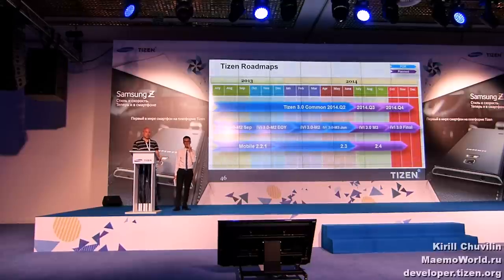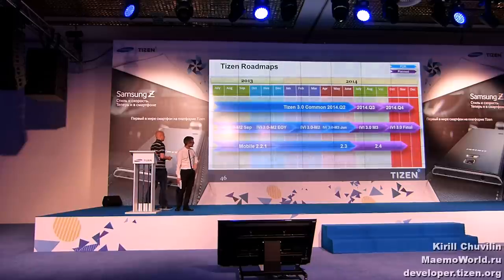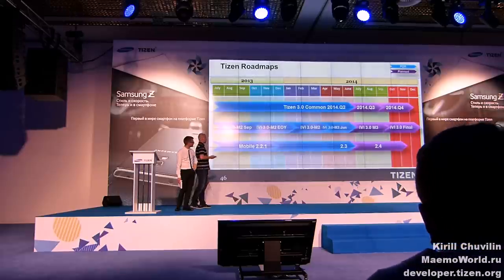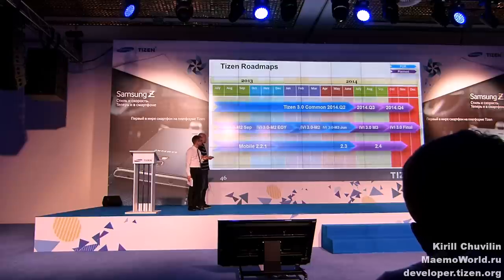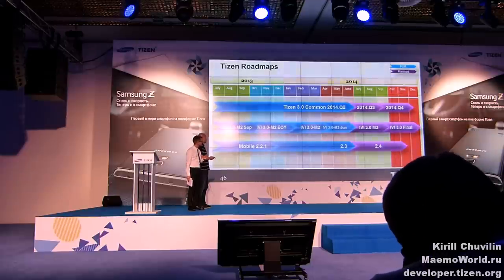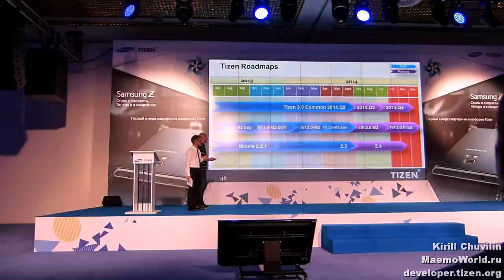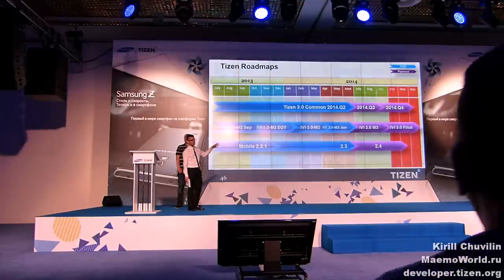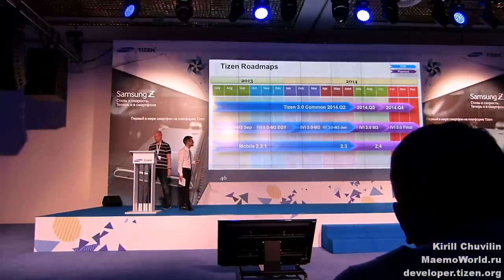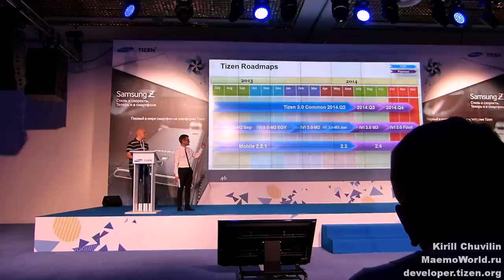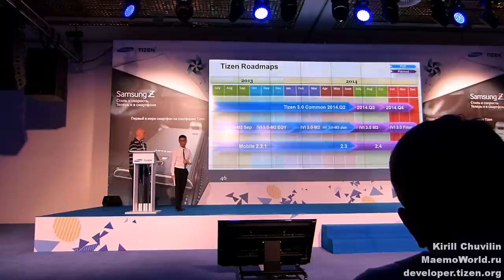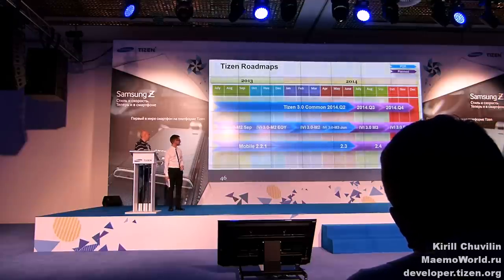Next, the Tizen 2014 roadmap. This year we have already released one common milestone. In plans we have two more milestone releases, Q3 and Q4. Tizen IVI has been following a quarterly cadence already for a while, so we have M2 and M3 in June and two more milestone releases planned. For mobile we have seen the 2.3 wearable update, and a 2.4 update is planned for this year.